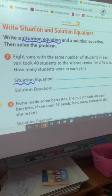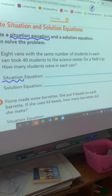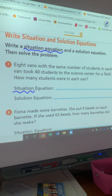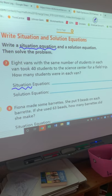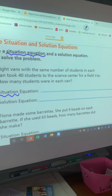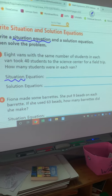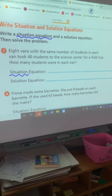Eight vans with the same number of students. So right there we already got some information. How many vans are there? There's eight. And then it says with the same number of students in each van. So we don't know how many students are in each van, but we know that each van has the same amount.